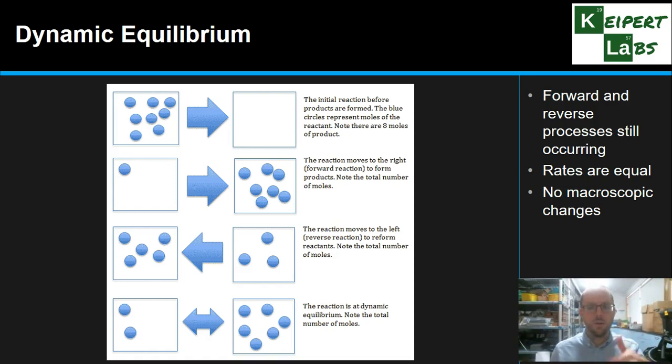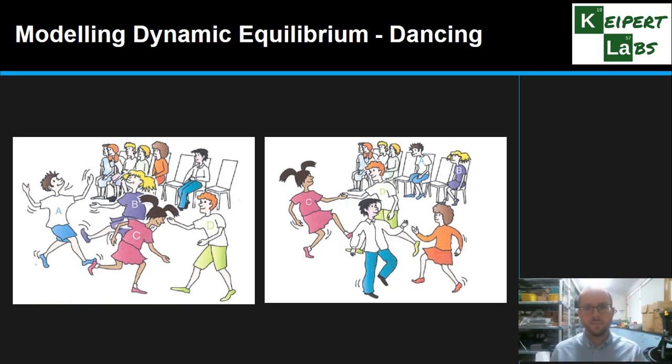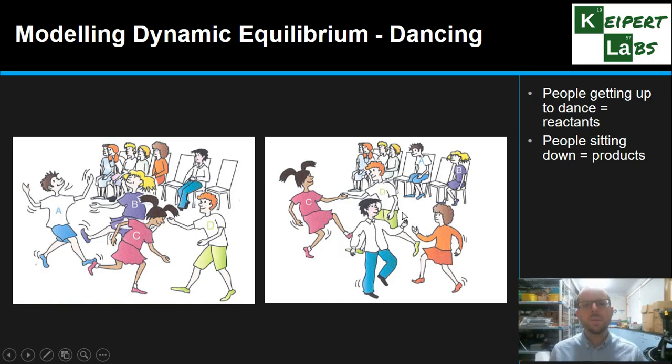And the way that I can visualize that or help you to see that is by looking at a model of looking at dancing. Now this is not an original concept, but just hear me out here. So what we're saying is that the people that are getting up to dance are the reactants. So the couples that are dancing are the reactants, the people sitting down are products.